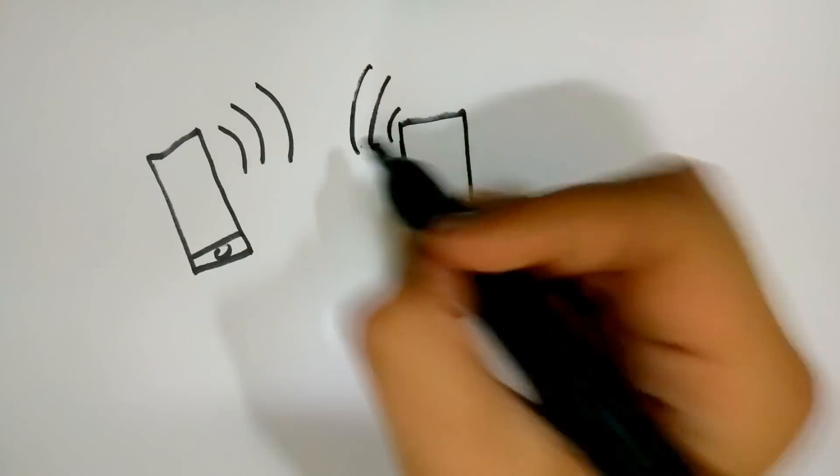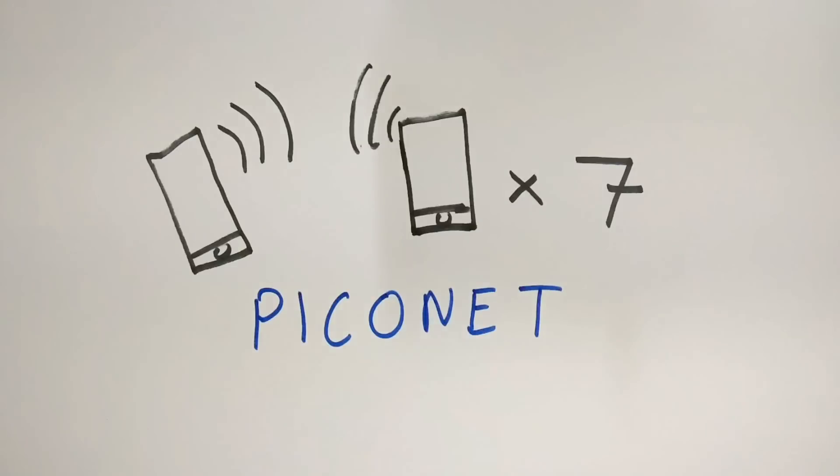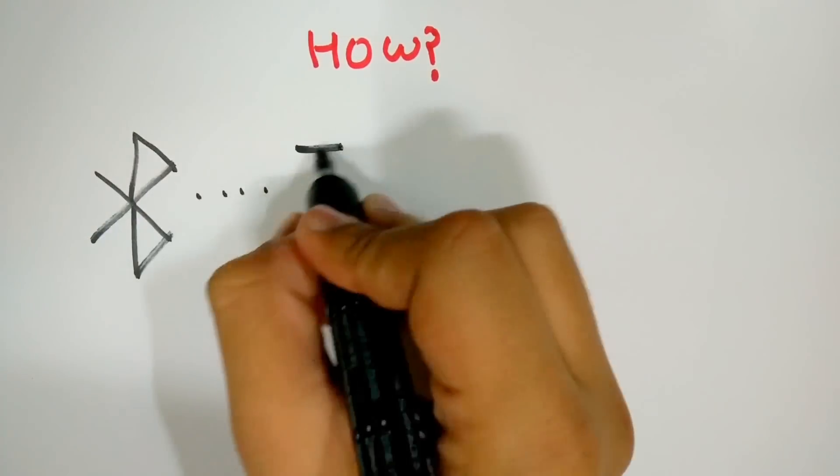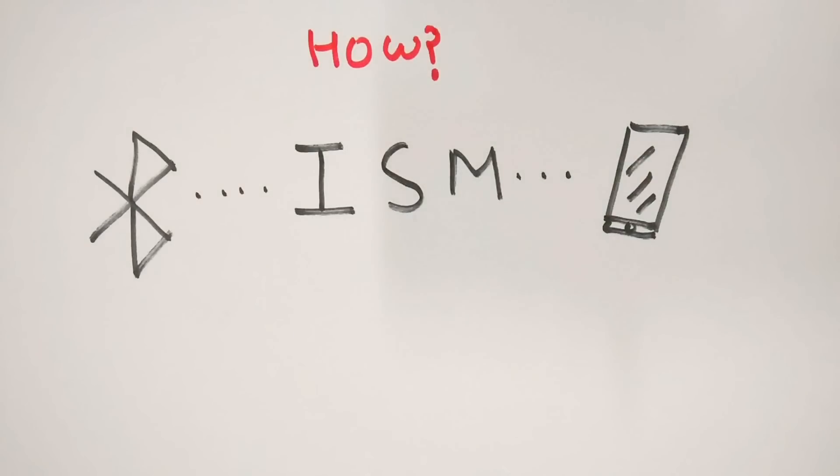With Bluetooth, you can connect 7 devices to one device and form a network of your own called the Piconet. But how is a file transferred from one device to the other? Bluetooth uses something called the ISM radio frequency band for communicating with other devices.